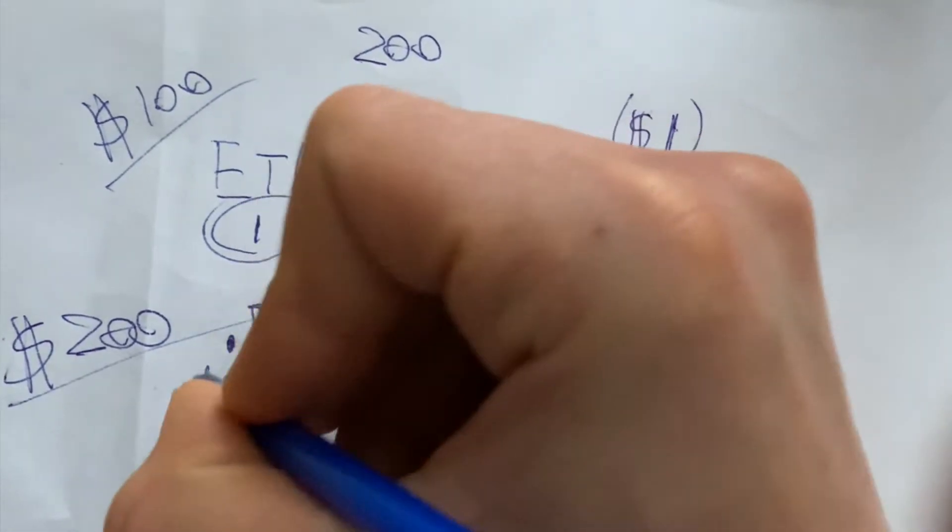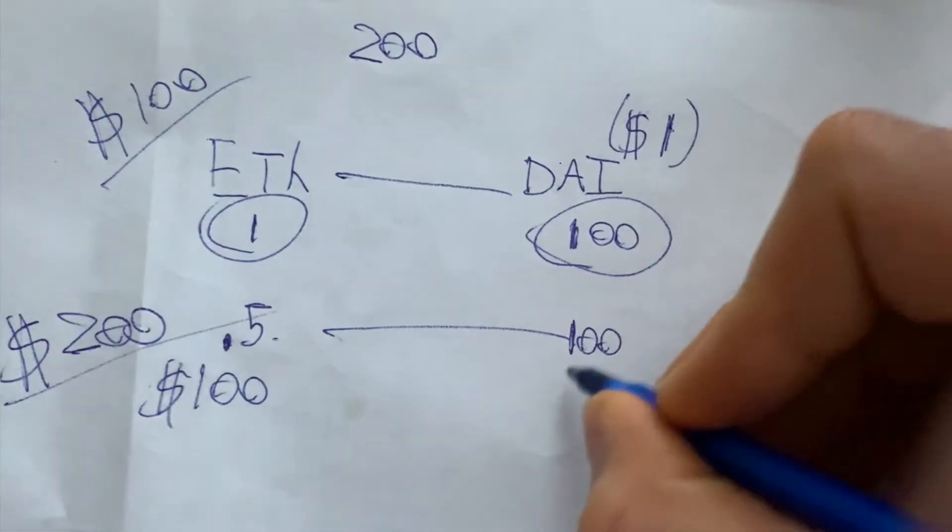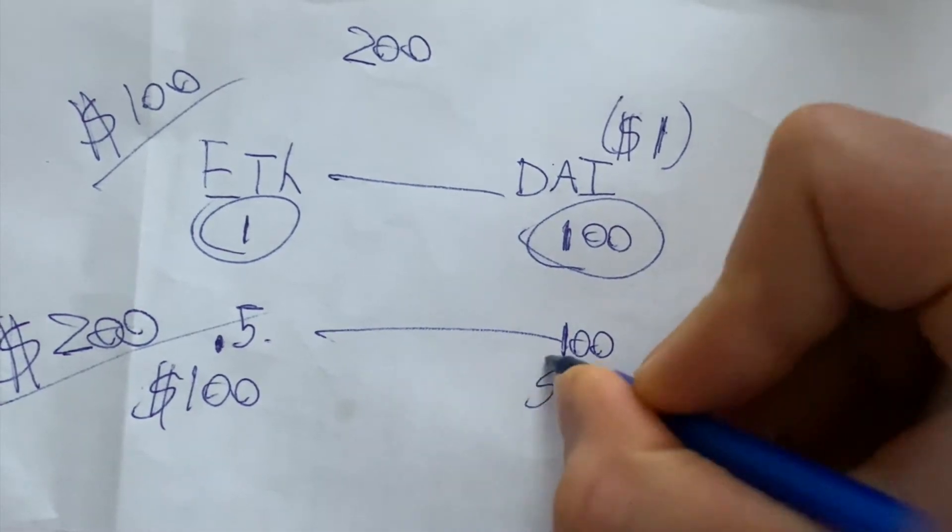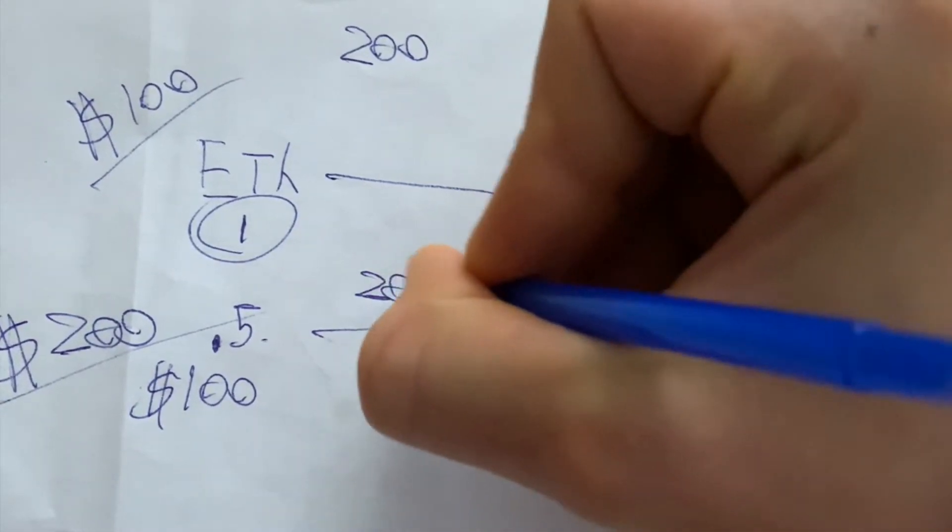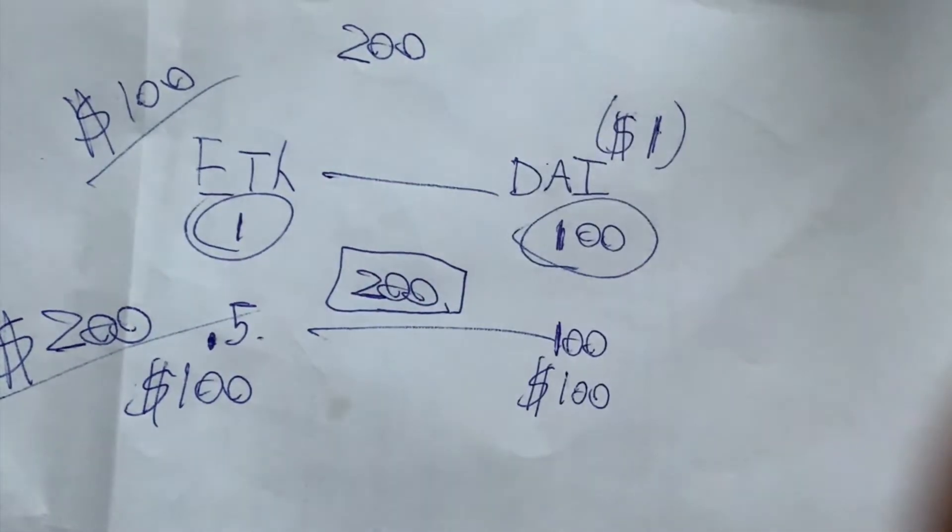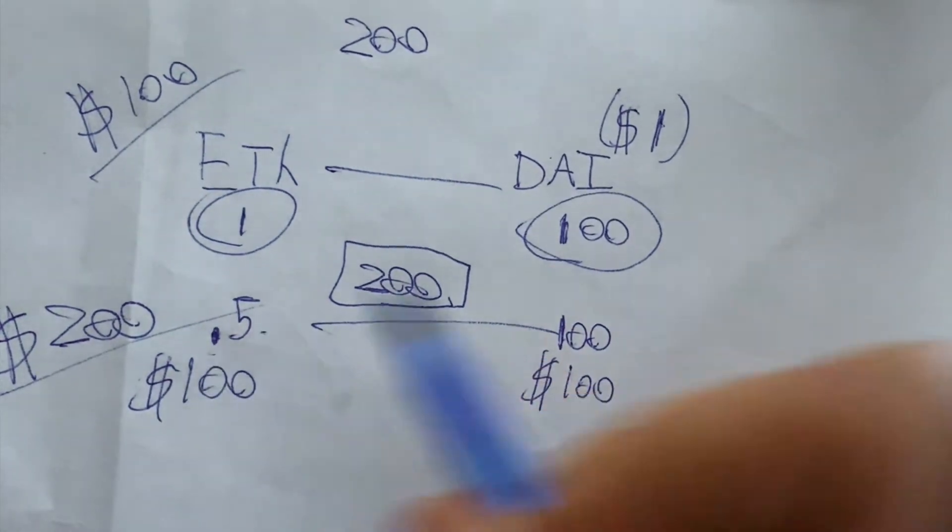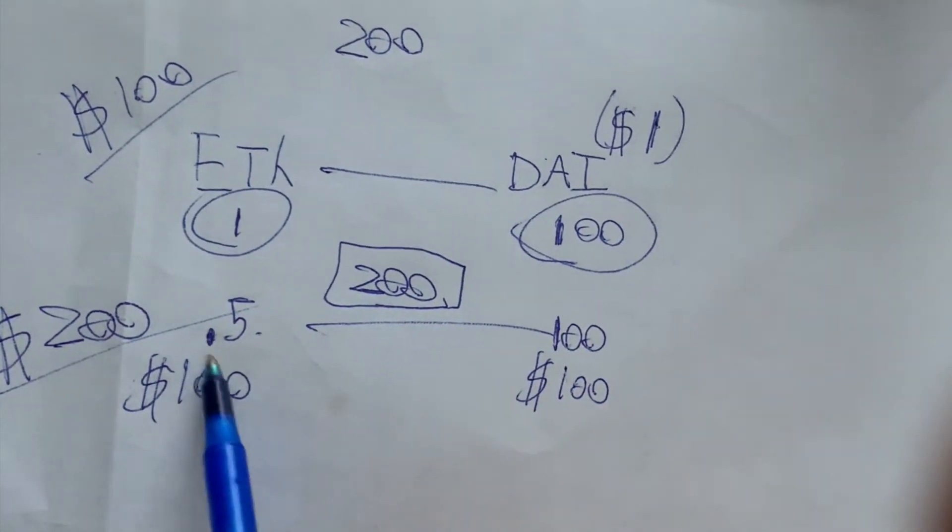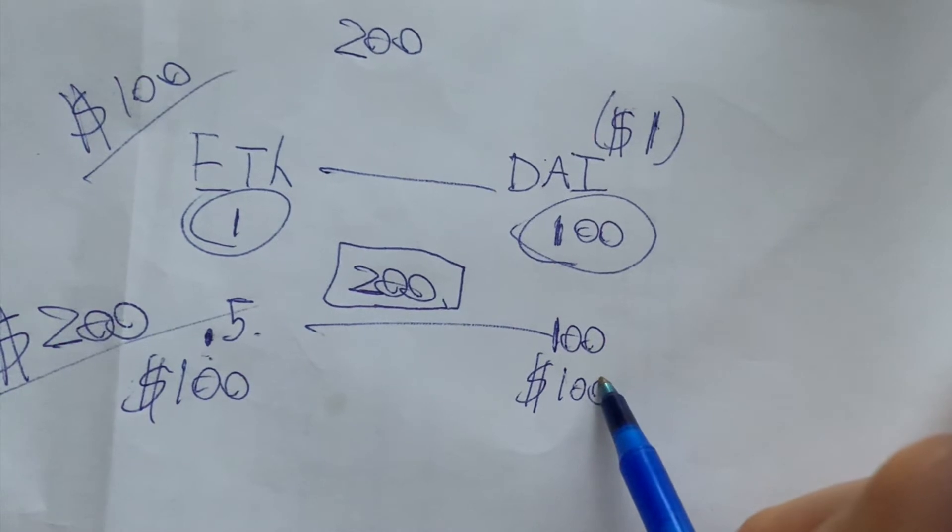So we have $100 of ETH, 100 DAI, $100, total of 200 still, because we're just providing liquidity. But we only have 0.5 ETH. We deposited one ETH, 100 DAI.